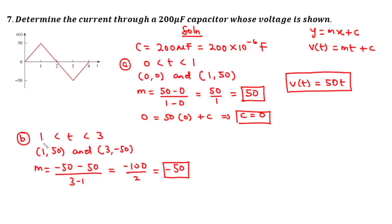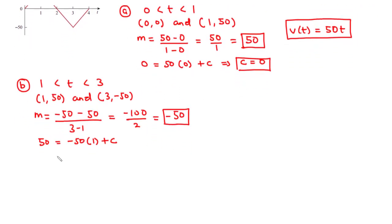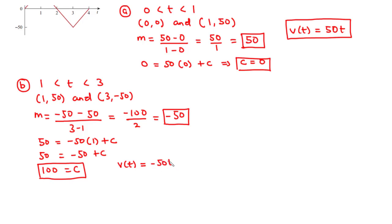To find c, we consider the point (1, 50): 50 = -50 times 1 plus c, which gives 50 = -50 + c, so c = 100. Therefore, the voltage function for the interval 1 to 3 is V(t) = -50t + 100.